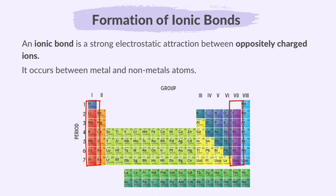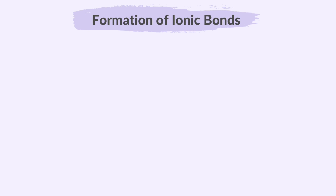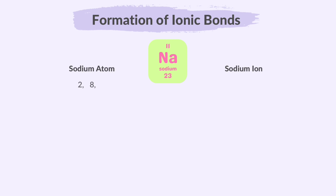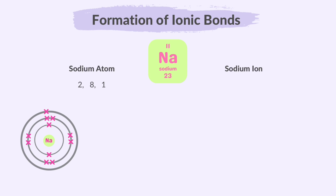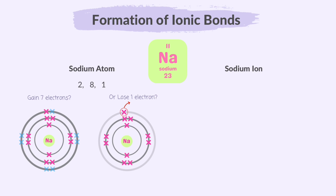Let's first understand how atoms form ions. Atoms become ions when they aim for a complete outer shell of electrons. For example, let's look at sodium. Sodium is a group 1 element, so let's look at its electron configuration first. Sodium has 11 electrons, with its electron arrangement as 2, 8, 1, meaning it has 1 electron in its outer shell. To get a full outer shell, it has 2 options: it could gain 7 more electrons to fill its outer shell, but that's less likely. Alternatively, it can lose 1 electron, leaving it with 8 in the outer shell, which is full.